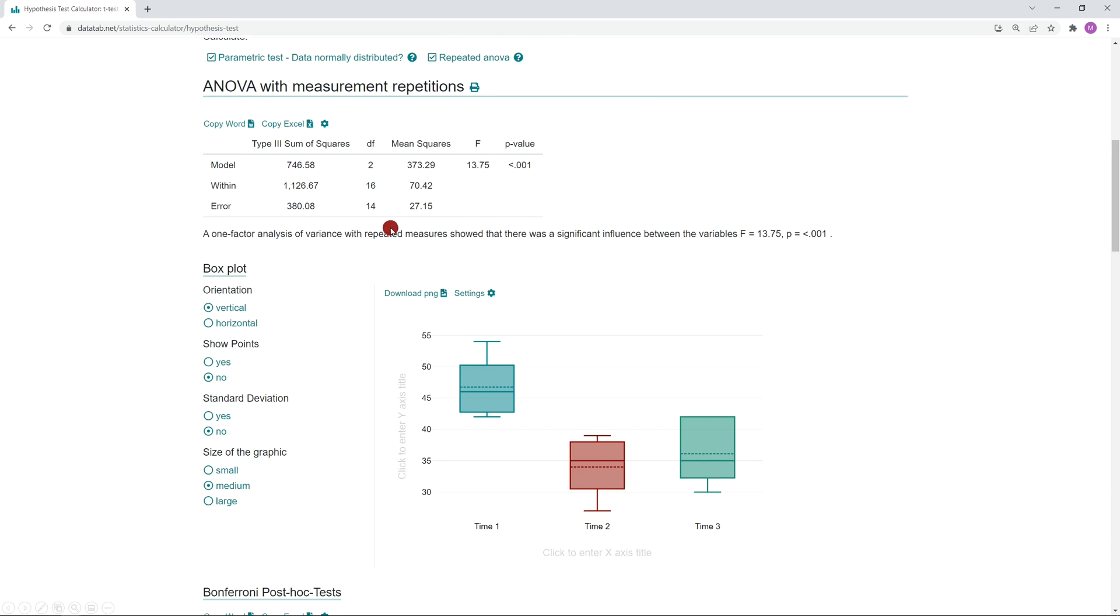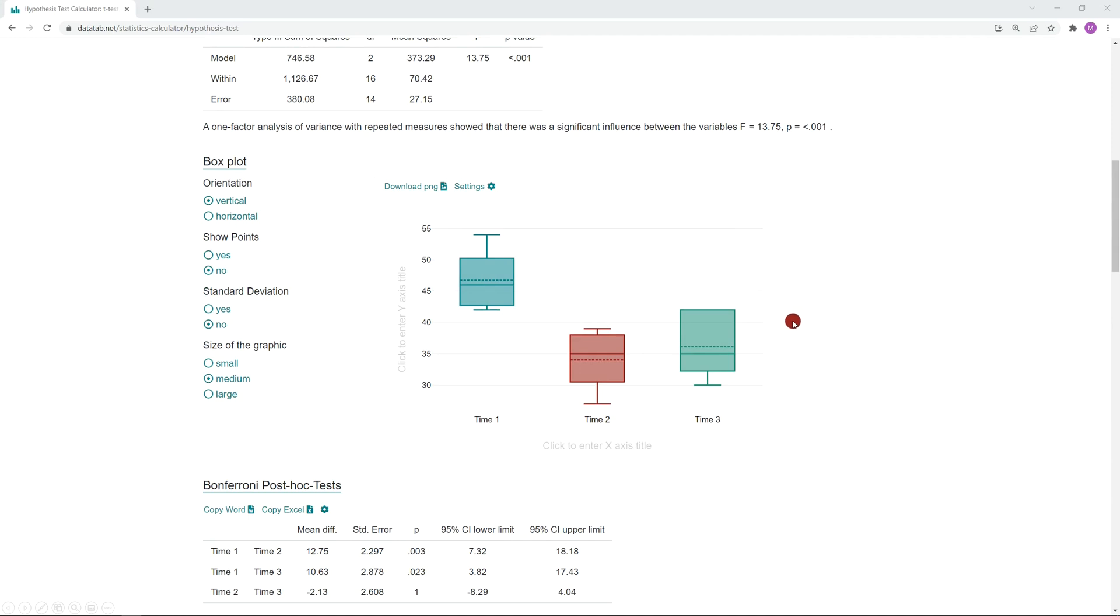Here you can read the p-value. If you don't know exactly how to interpret the results, just read the interpretation of the results in words. In addition, the results are shown in a box plot. Finally, the Bonferroni post hoc test is calculated.